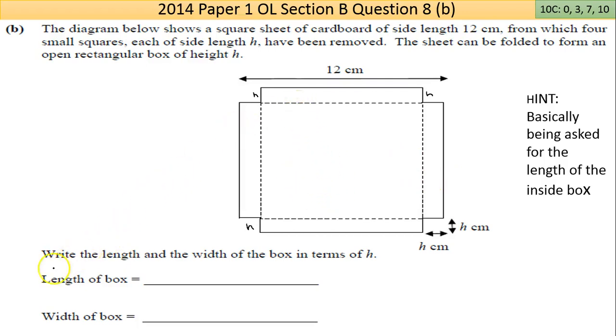This question is actually asking you to write the length and the width of the box in terms of h. If you think about it, when this folds up, the length of this smaller rectangular box is going to be 12 take away h take away h. The same thing down the other side, this other side here folds up and the side here folds up. It's going to be 12 take away 2h.